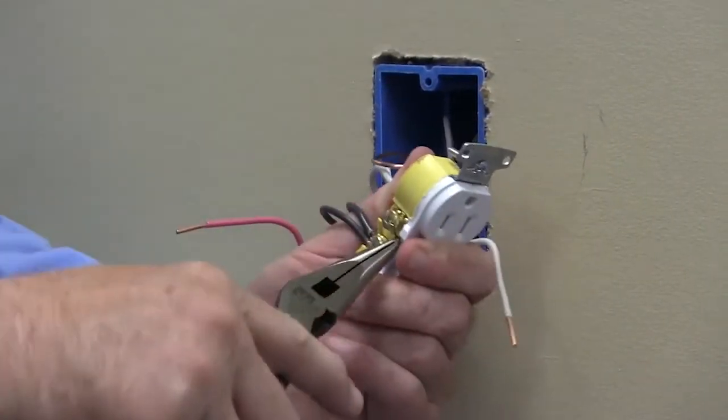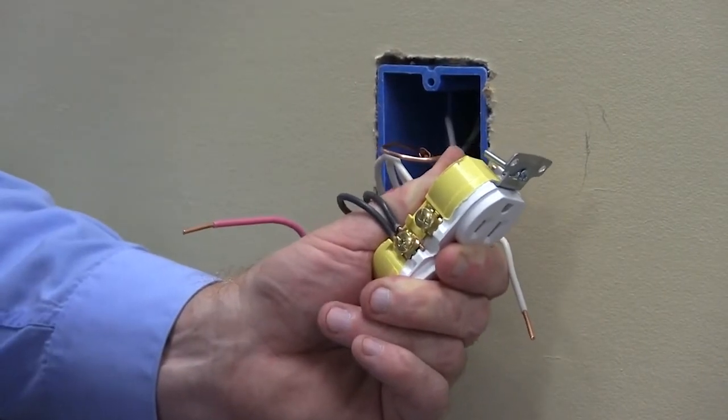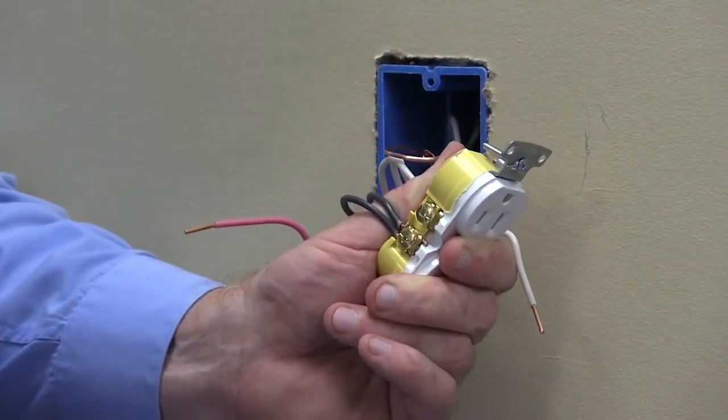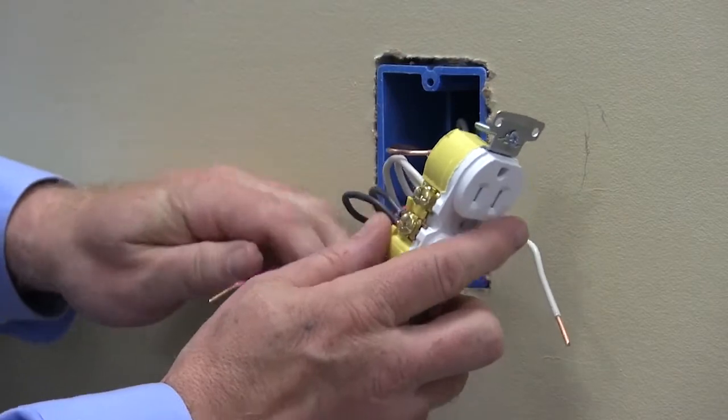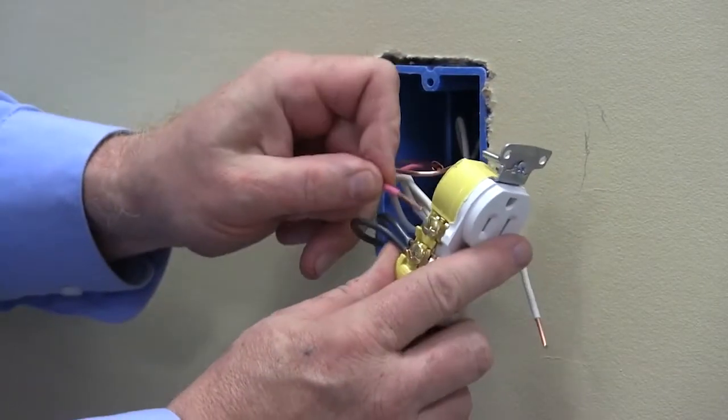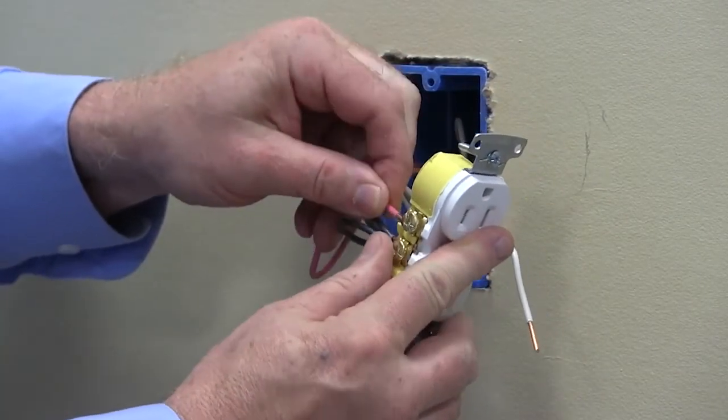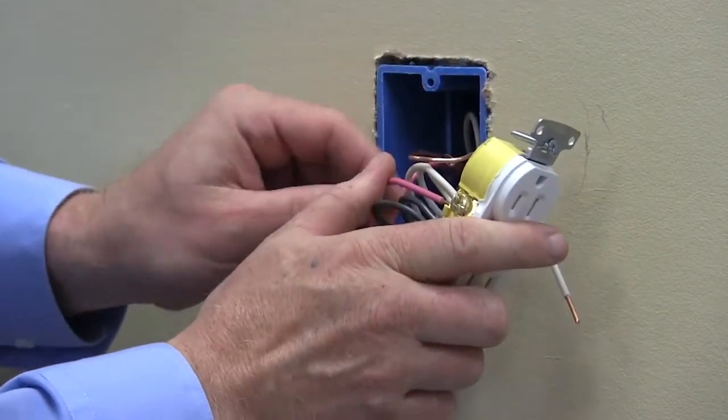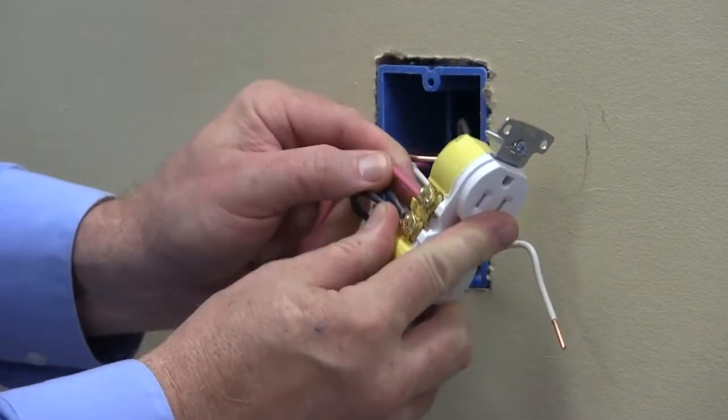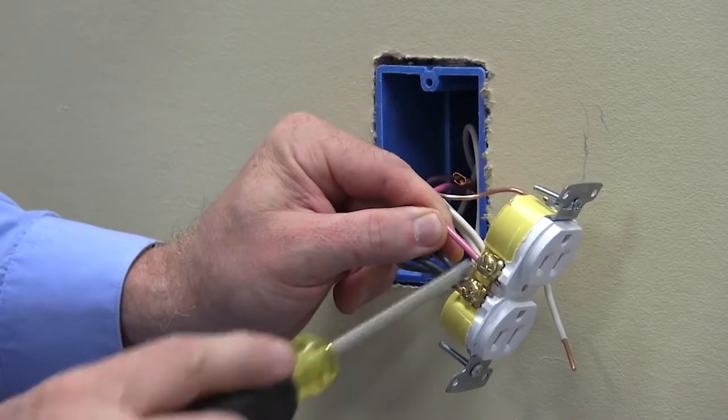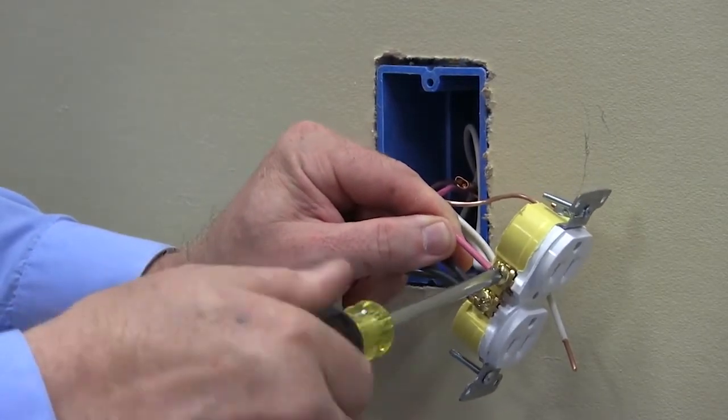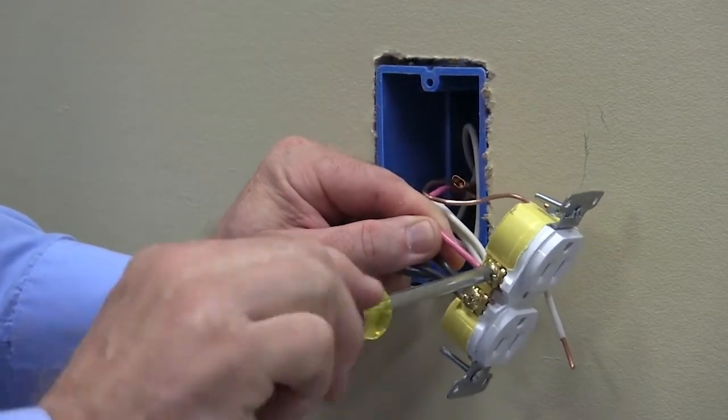Now, we would like to show how to split wire this receptacle. Break off the break off tabs as you would typically do for split wire. We have already terminated the bottom half of the receptacle with the power in and downstream feed through. Using the red wire, terminate the top half of the receptacle for split wire circuit control.